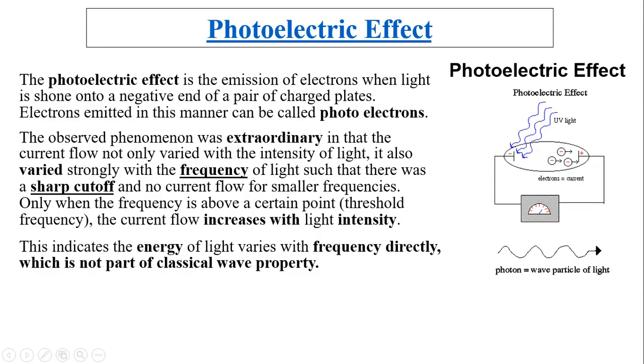Okay, so photoelectric effect basically is the emission of electrons when light is shone onto a negative end of a pair of charged plates. Electrons emitted in this manner are called photoelectrons. So, the observed phenomenon was extraordinary, in that the current flow not only varied with the intensity of light, it also varied strongly with the frequency of light, such that there was a sharp cutoff and no current flow for smaller frequencies. Only when the frequency is above a certain point, called a threshold frequency, the current flow increases with light intensity. This indicates the energy of light varies with frequency directly, which is not part of classical wave property. So, here is the energy of the electrons. There is no electrons at all until this is called a threshold frequency of light. Then, the energy increases as the frequency increases.